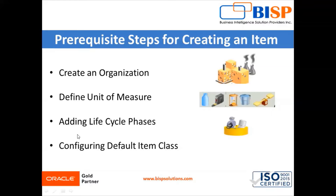The third step is adding lifecycle phases. An item may go through multiple stages, starting from maybe prototype to obsolete. In fusion application, all items must belong to an item class. Oracle Fusion application provides a predefined item class called the root item class. You can create additional item classes as child item classes of a particular root item class.